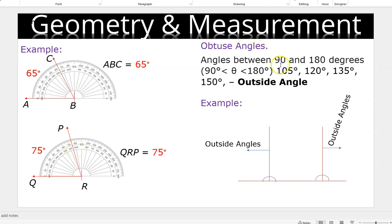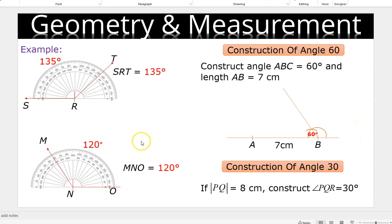Obtuse angles are angles more than 90 degrees but less than 180 degrees. I call them outside angles. When constructing any angle more than 90 but less than 180 degrees, between the right angle triangle and the baseline or straight line, the angle falls outside. At the second point, if you construct the angle there, the angle will fall within the right angle triangle and the baseline. For example, looking at SRT, it gives us 135 degrees. And angle MNO also gives us 120 degrees.